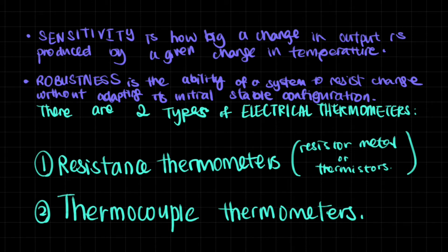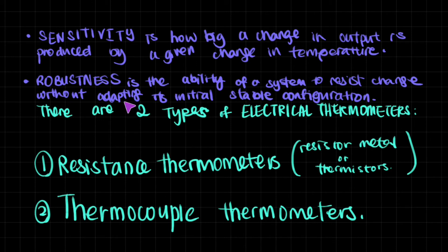Then we have sensitivity. Sensitivity is how big a change in output is produced by a given change in temperature. If there's a very small change in temperature but the color change of a certain wire is huge, then we can detect very small differences — that's why it's called sensitivity. Then we have robustness. Robustness is the ability of a system to resist change without adapting its initial stable configuration — basically it means it will remain steady and doesn't get ruined by using it too much.